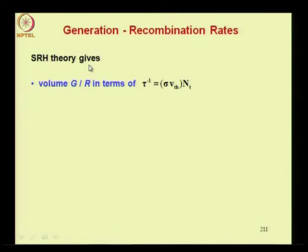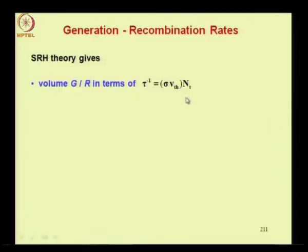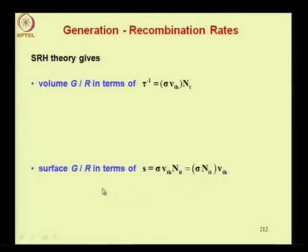Thermal generation, thermal recombination, and surface recombination are all governed by Shockley-Read-Hall theory — that is why these three are grouped together. The SRH theory gives the volume generation-recombination in terms of a reciprocal time constant equal to the capture cross section of the trap — which traps electrons and holes in sequence causing recombination — multiplied by thermal velocity (the velocity with which the carrier approaches the trap) and the trap concentration per unit volume N_T. Analogously, the surface generation or recombination rate is expressed in terms of a velocity S equal to the capture cross section multiplied by the thermal velocity multiplied by N_iT, the trap concentration per unit area.